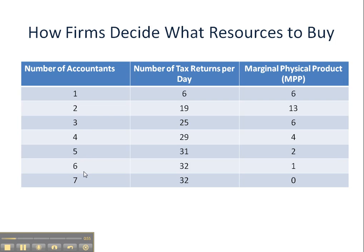We've got a schedule where we could hire one accountant, two, three, four, up to seven. The next column gives us the number of tax returns that we would expect to be able to finish as a result of hiring these different numbers of accountants. The general trend is to increase, but it looks like after the second worker, the number of tax returns per day increases at a slower and slower rate.